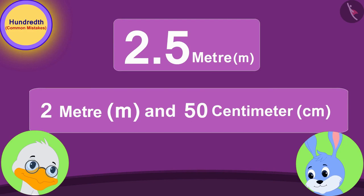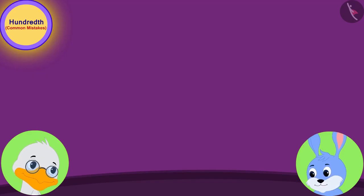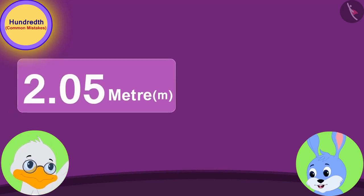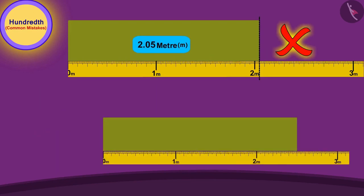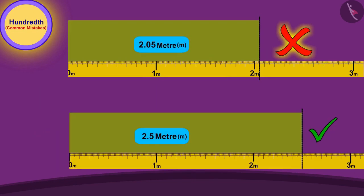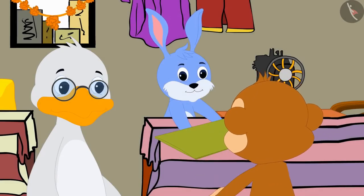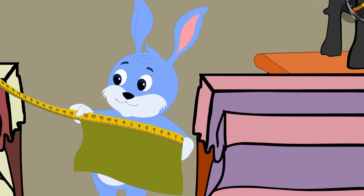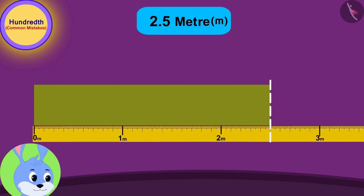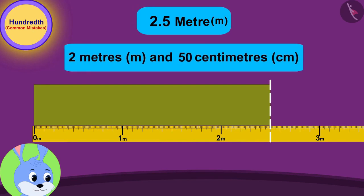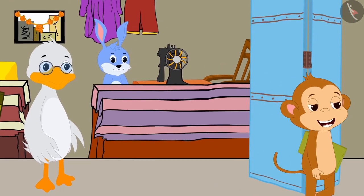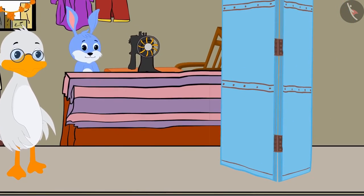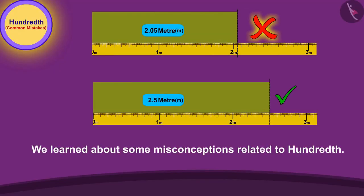Uncle explained to Bunny. Now I understand, uncle, that 2.05 meters and 2.5 meters are not equal. And I accidentally gave Babban cloth of the wrong length. Bunny told uncle. Bunny immediately took back the cloth from Babban and this time measured 2.5 meters, or 2 meters and 50 centimeters of cloth using his tape, cut it and gave it to Babban. Babban happily returned home with the cloth of the right length. Children, in this video we learned about some misconceptions related to hundredth.